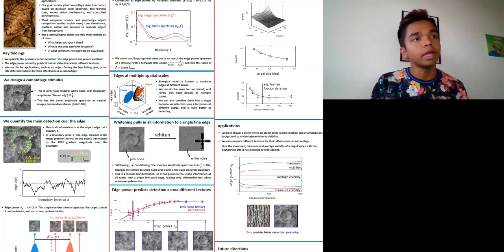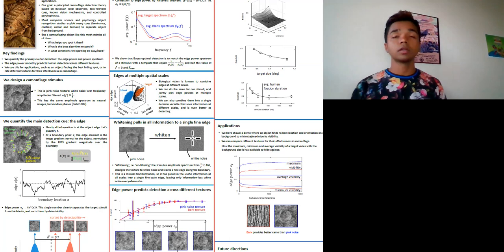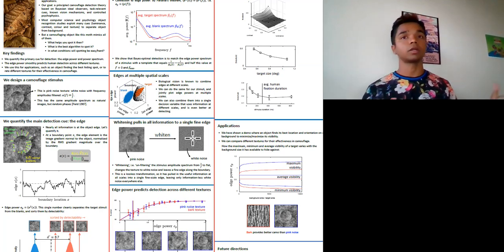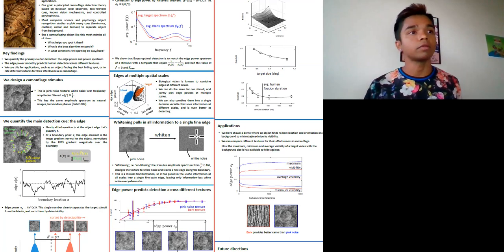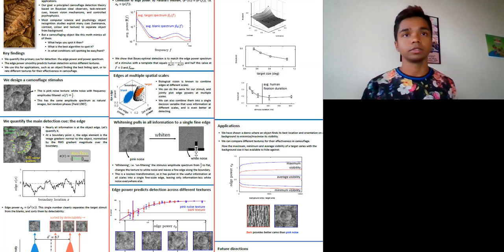But it leaves this fine edge where the true target boundary used to be. This is a lossless transformation, which means that it concentrates all of the information at all the scales into this one fine edge at a single scale.